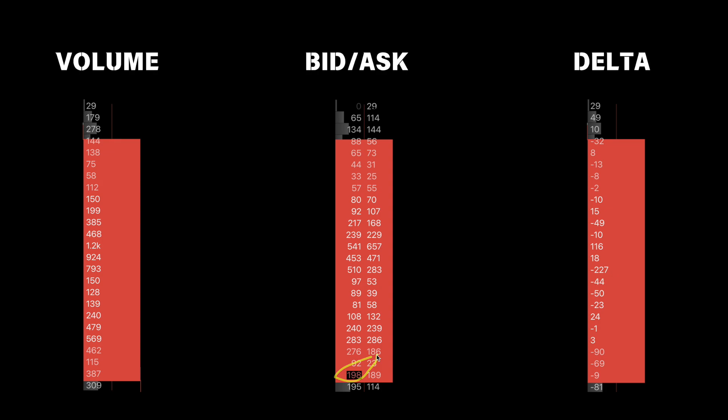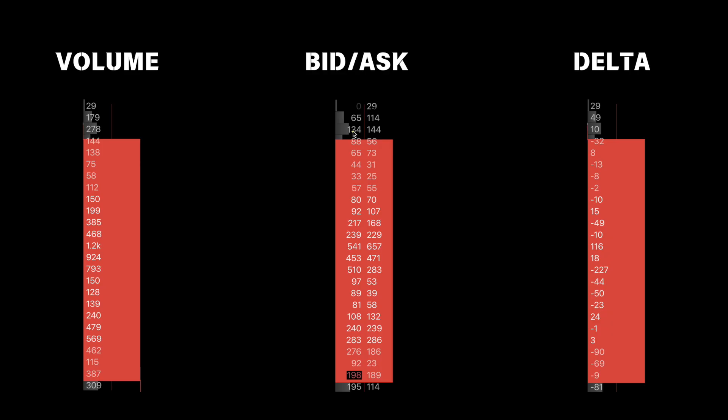Sometimes I'll flicker through between the volume and the delta footprint just to get a quick snapshot, but usually I'll have it sitting on the bid ask footprint. If you're new to order flow and want to learn more, we're going to be going through all the basics of order flow — an A through Z library on the foundations of order flow and footprint charts on this YouTube channel. Make sure you hit the subscribe button if you want to learn everything from the ground up, and we'll see you guys in the next video.